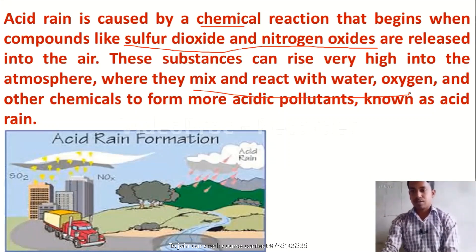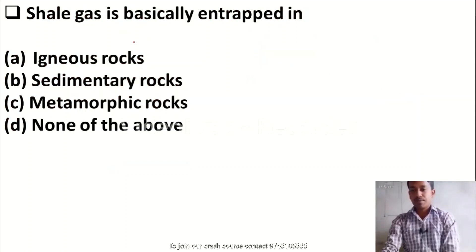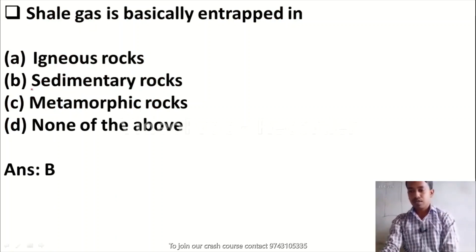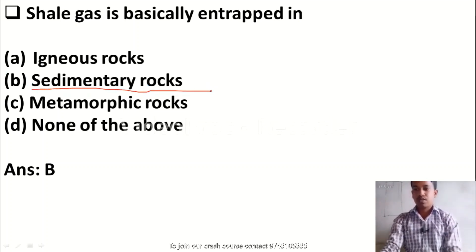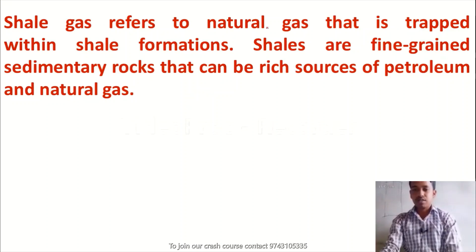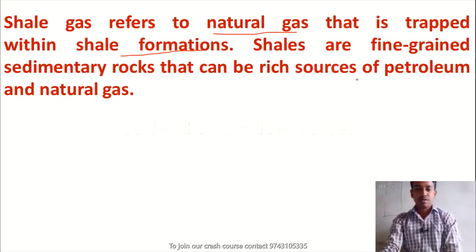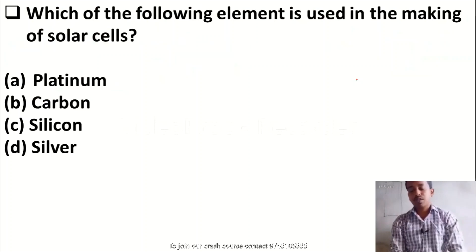Shale gas is basically entrapped in: Option A, igneous rocks; Option B, sedimentary rocks; Option C, metamorphic rocks; Option D, none of the above. The correct answer is Option B — sedimentary rocks. Shale gas refers to natural gas that is trapped within shale formations. Shales are fine-grained sedimentary rocks that can be rich sources of petroleum and natural gas.